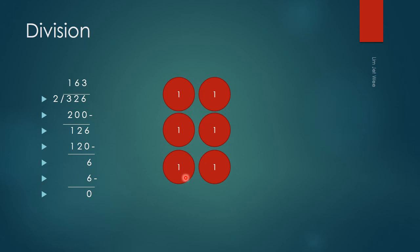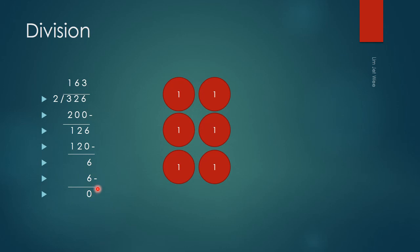The last digit 6 is at the ones position, so I group the ones in 2s: two, two, two — I have 3 groups of 2. The combined total is 6. Subtracting 6 from 6 leaves no remainder. The answer is 163. So the grouping method used by the Singapore division model does work.